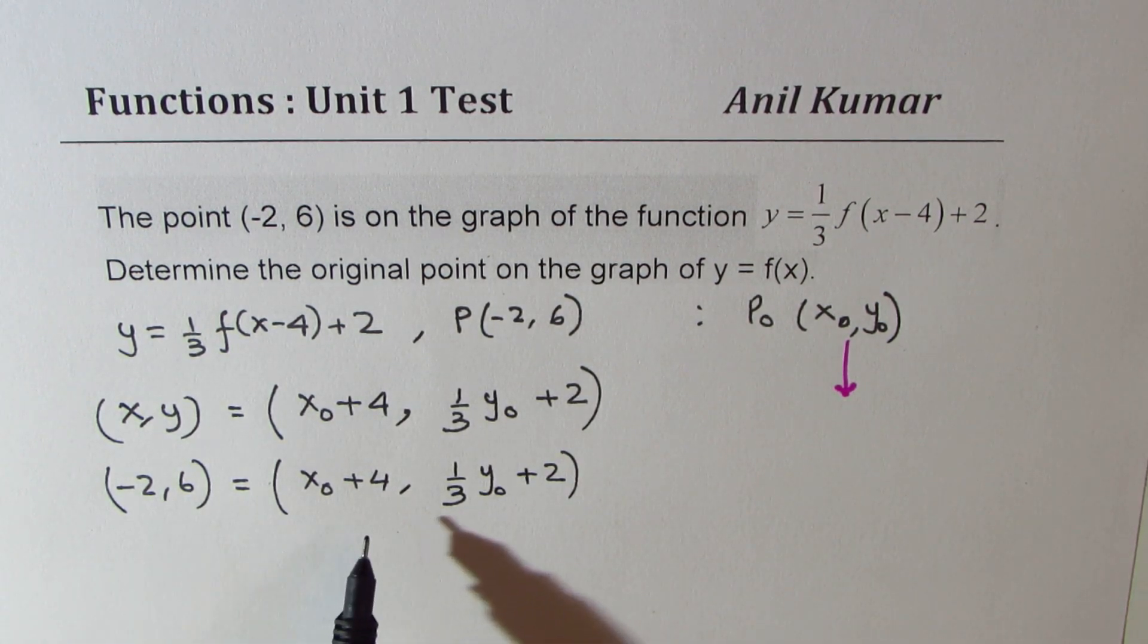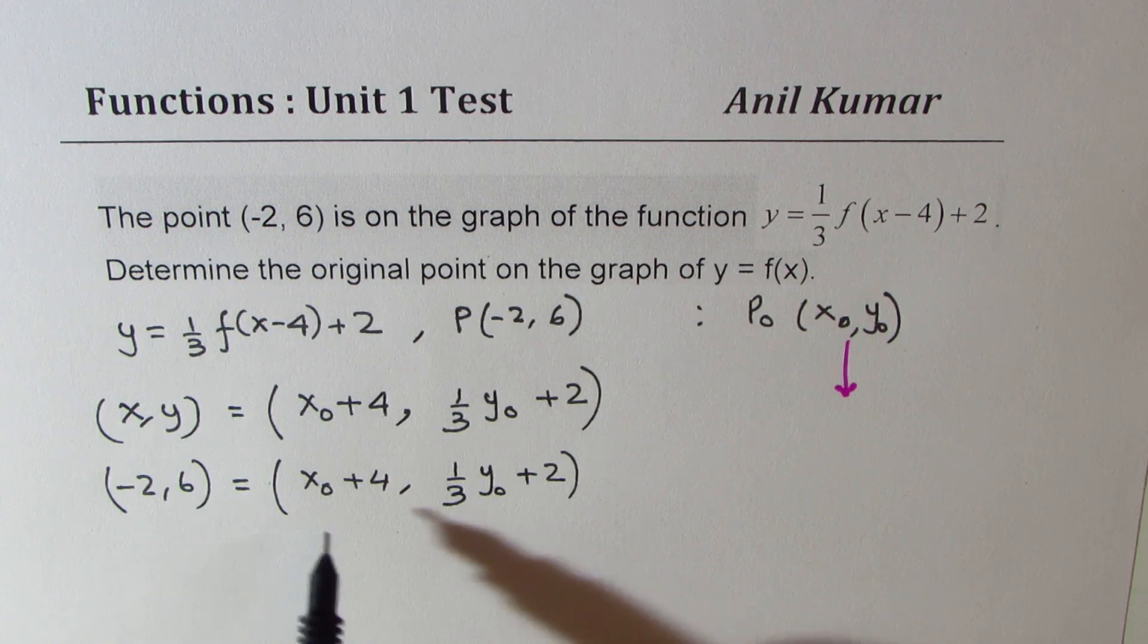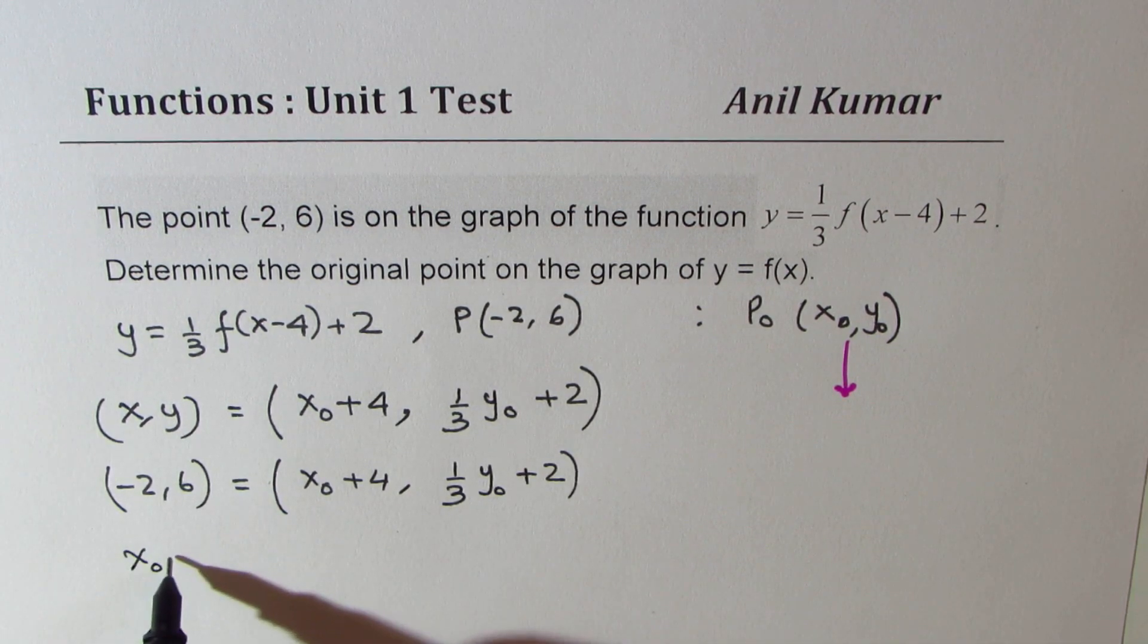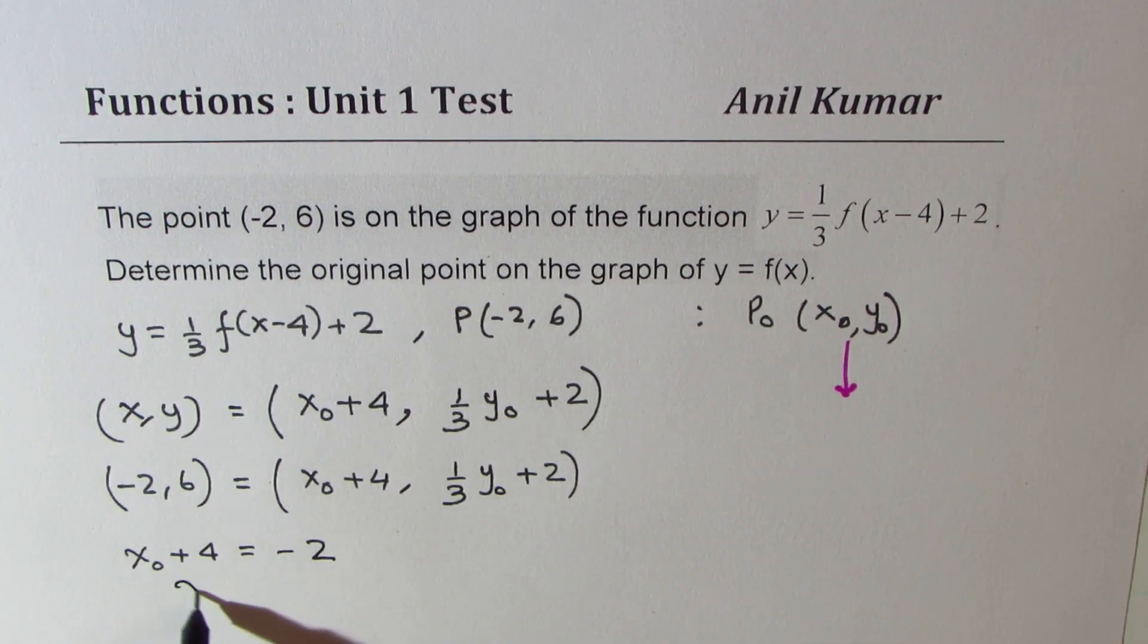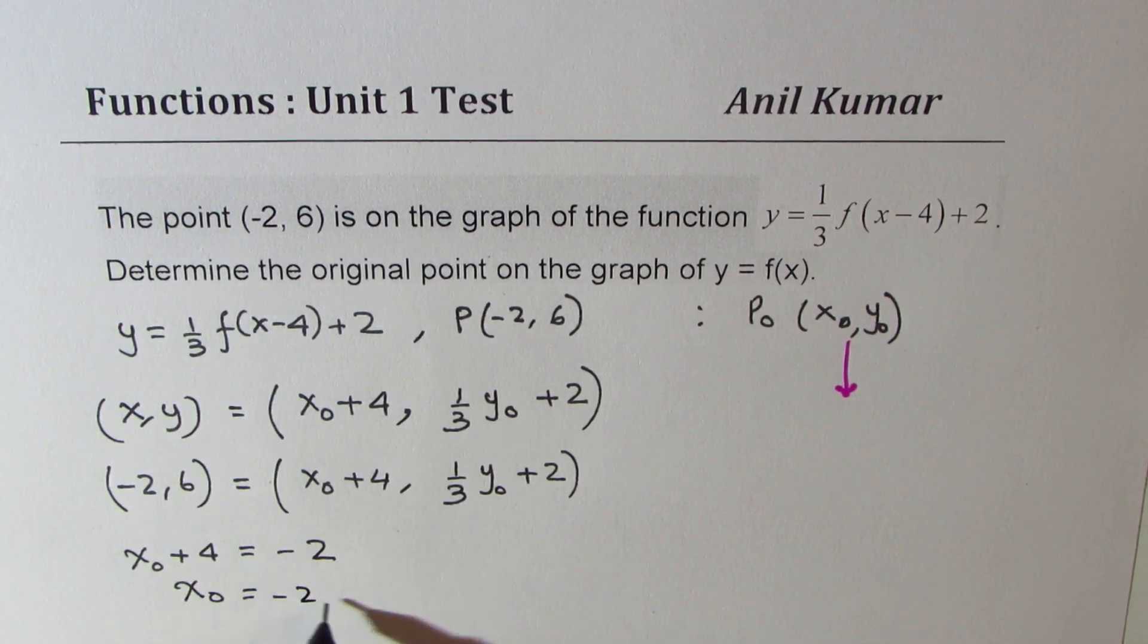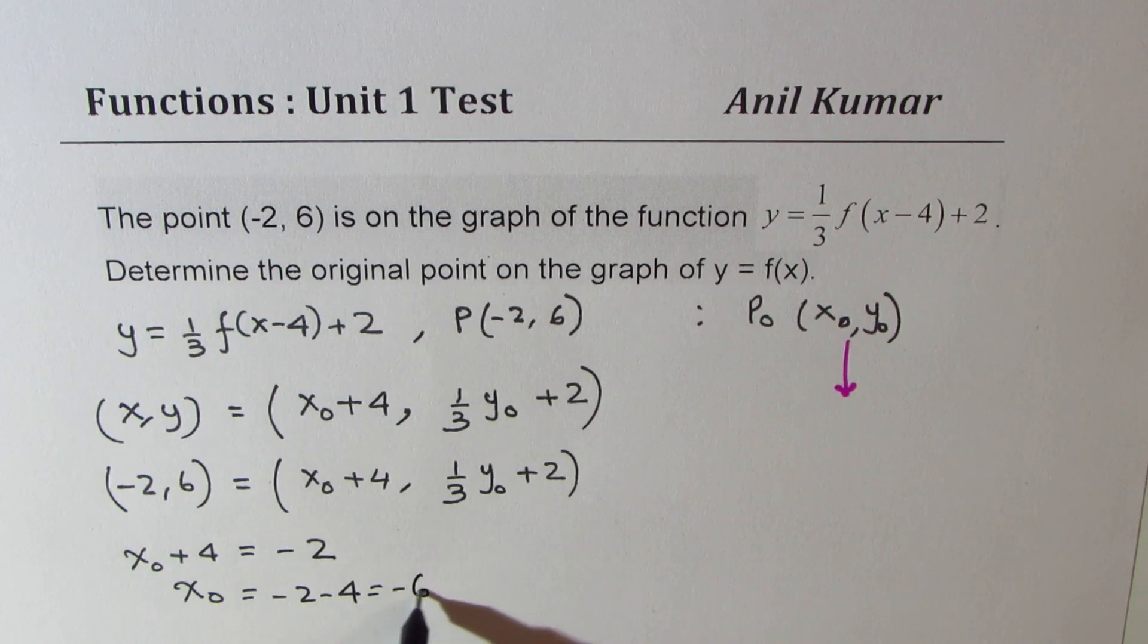Now you can compare and get your answer. So we know that the original point x coordinate value plus 4 is -2, and therefore x₀ is -2 - 4, which is -6.